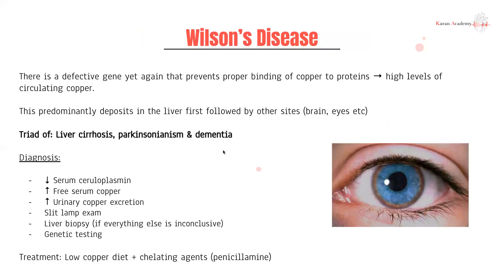Next, Wilson's disease — pretty buzzwordy. You have an issue with the gene that prevents proper binding of copper to proteins. As long as metals are bound to a protein it's okay; the issue arises when copper can't bind to proteins. You end up with high serum levels of free copper.